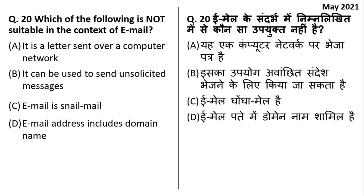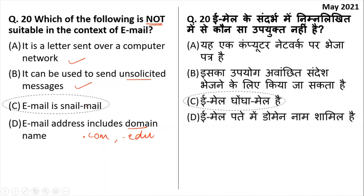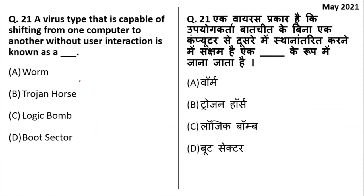Which of the following is not suitable in the context of email? Email is a letter sent over a computer network — true. It is used to send unsolicited messages (unwanted messages like advertisements) — true. Email addresses include a domain name like .com or .edu — true. The statement that is not true is 'email is a snail email' — option C is incorrect, making it the right answer to this question.